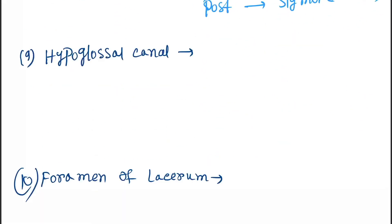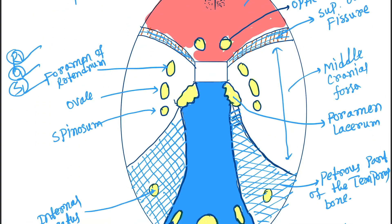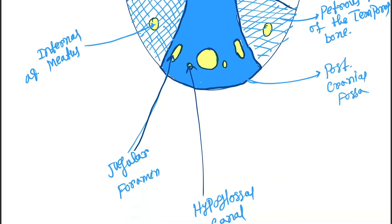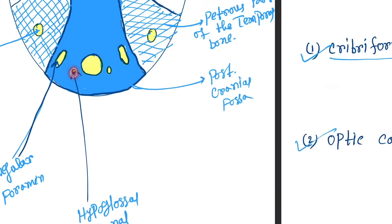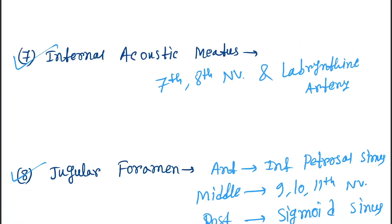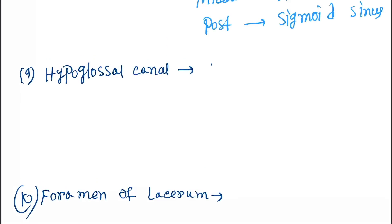Next is the hypoglossal canal. The structure passing through the hypoglossal canal is the twelfth cranial nerve, that is the hypoglossal nerve.